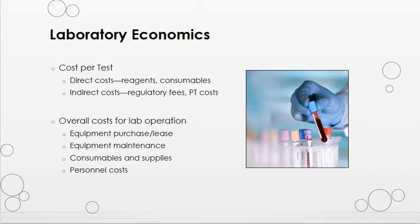In addition to looking at cost savings, laboratory administration must also pay attention to costs associated with lab operation. Cost per test is often calculated for each test run in the lab and especially taken into consideration when new test methodologies are being weighed. Cost per test takes into account direct costs such as reagents, gloves, lab coats, pipettes, pipette tips, and other consumables, as well as indirect costs such as proficiency testing costs or regulatory fees. The overall cost for lab operations will include everything from equipment purchase or lease and equipment maintenance to consumable supplies and personnel costs.